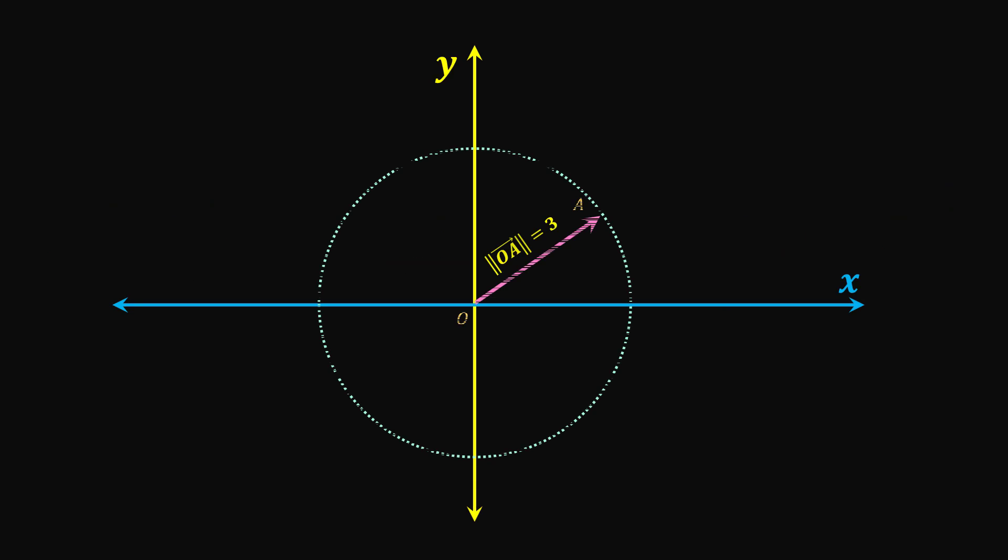Because the angle between OA and the positive x-axis is 30 degrees or π/6, we can write length of BA which gives us y component of the vector equals 3 times sine of π/6 times J, because 3 is magnitude of the given vector.